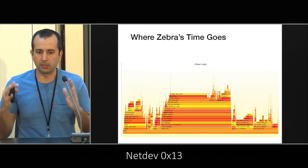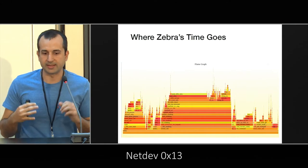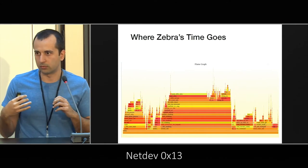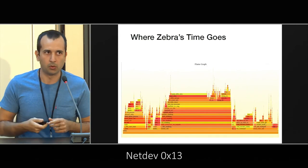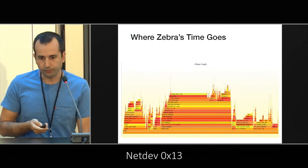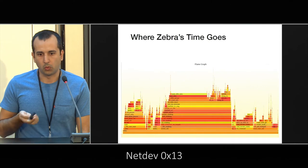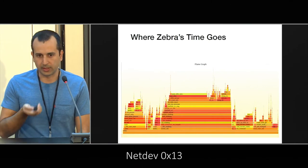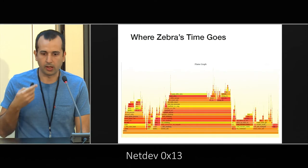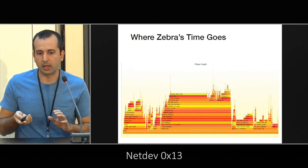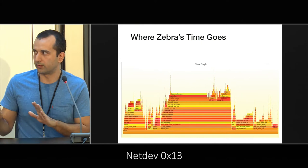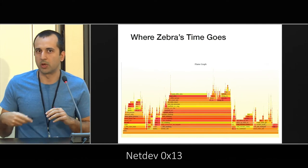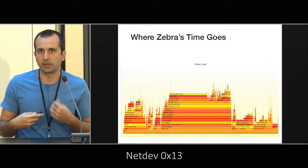In the middle there's the netlink part — that's the big forwarding plane call. So basically trying to push routes to the kernel. The data plane work that Mark did and I'm presenting had a couple of goals. One of them was to move the data plane work to a different thread so that Zebra could be doing other stuff instead of blocking.